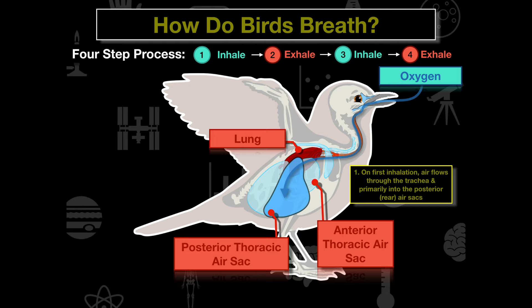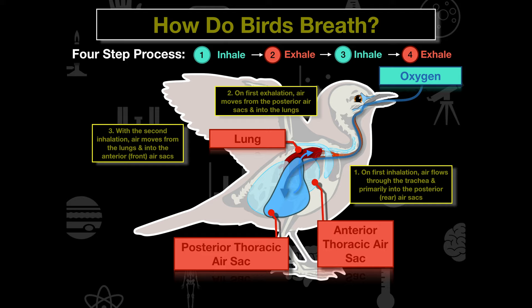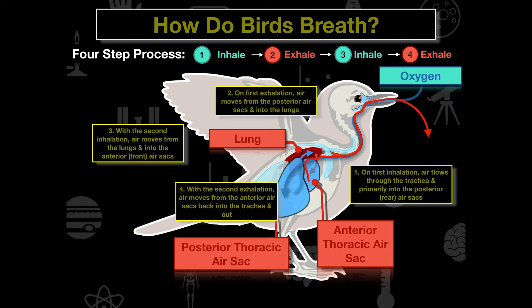On the second step, the bird exhales and the air moves from the posterior air sac into the lungs — creating negative pressure — but it does not yet exit the bird's beak. On the third step, the bird inhales a second time and the air moves from the lungs into the anterior air sac. On the fourth step — the second exhale — the air moves from the anterior air sac back through the trachea and out of the bird's beak.